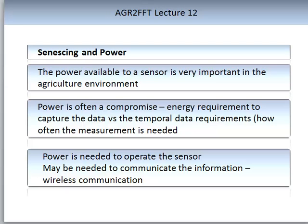A very important component of sensing in an agricultural environment is power — the amount of energy available to the sensor at any one point in time. Power is often thought of as a compromise between the energy requirements of data capture versus the temporal data requirements: how often is the measurement needed? Power can be needed for two components: to operate the physical sensor, and in some situations also to communicate the data via wireless communications or radios.